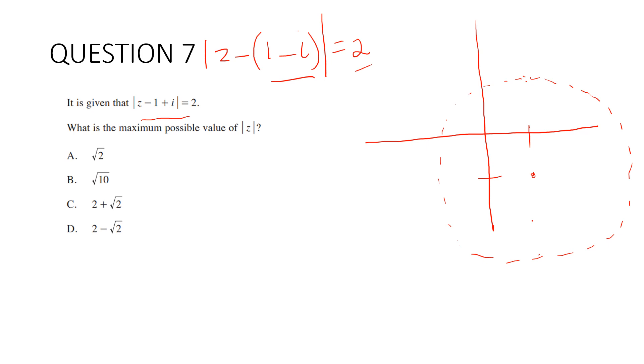Now, maximum possible value of magnitude of z. We want z to be as far away as possible from the origin. It has to lie on the circumference, so that's over here. This is 2 because it's the radius, and this part is root 2. So our answer is 2 plus root 2, which is C.